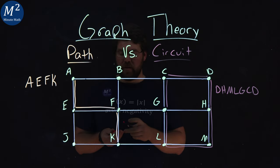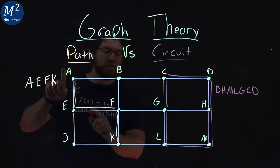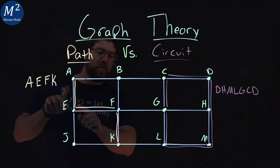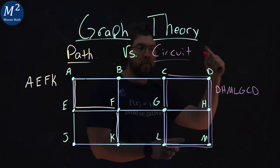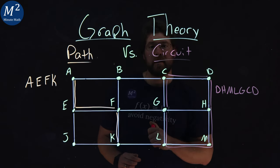So that's the main difference between a path and a circuit. A path connects two vertices here with edges. A circuit is a path, but it has to come back to where it started.